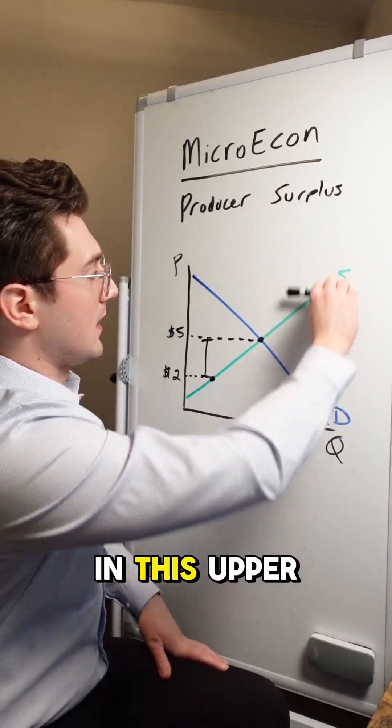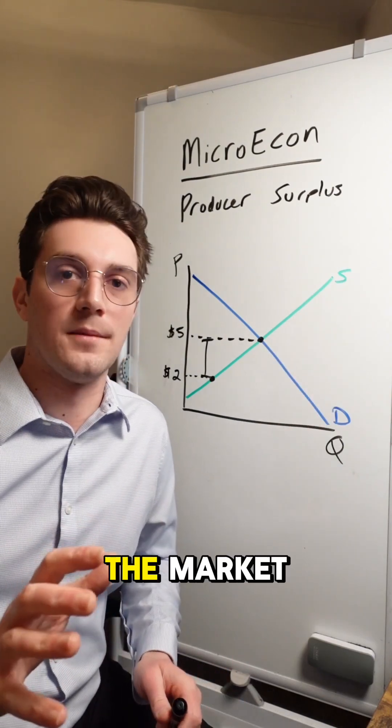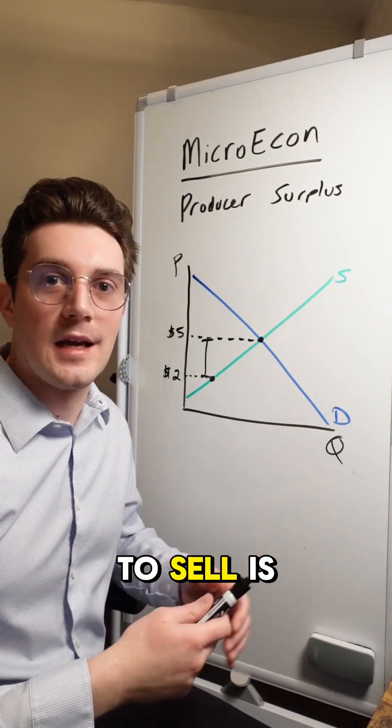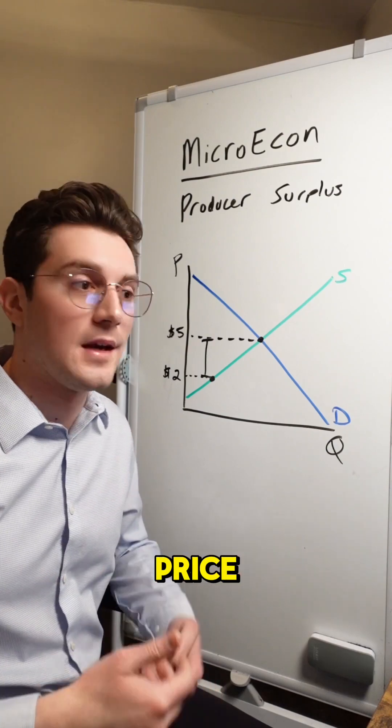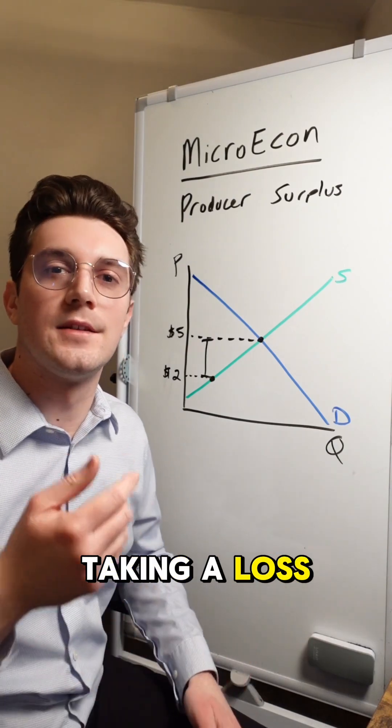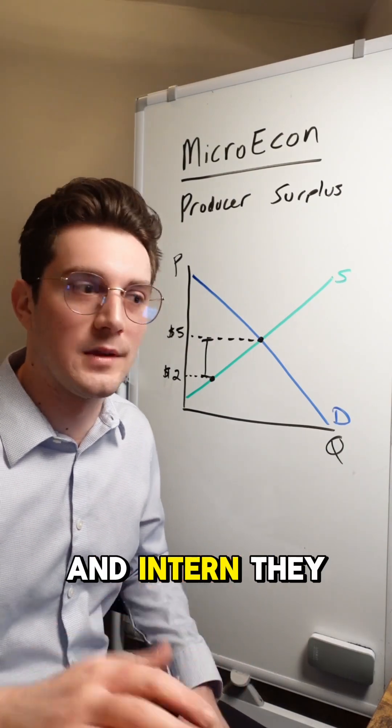But any producers in this upper half of the supply curve won't be selling the market because their willingness to sell is above the equilibrium price. So they'd be taking a loss if they were to sell on the market. And in turn, they won't participate.